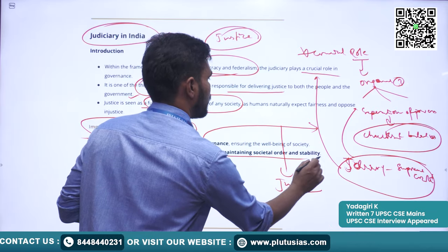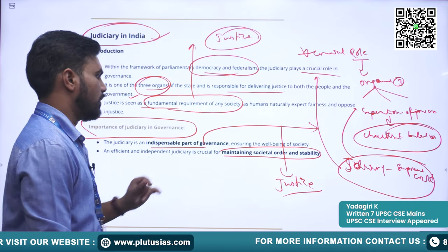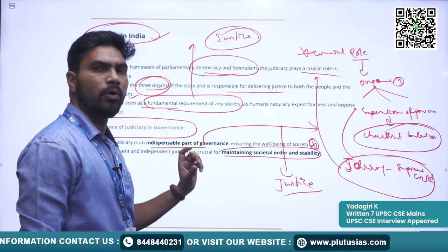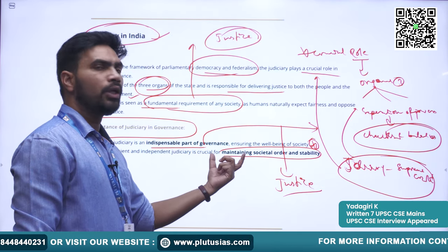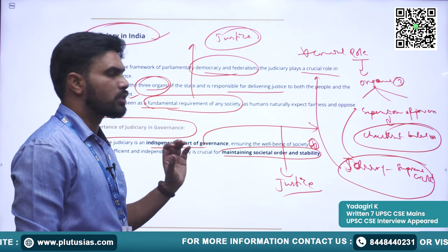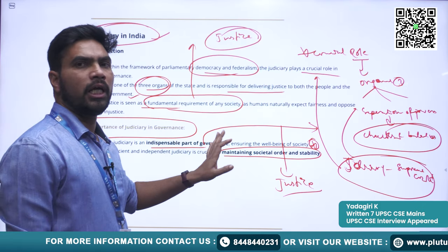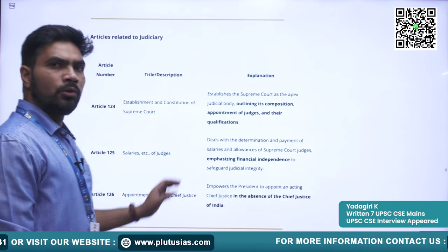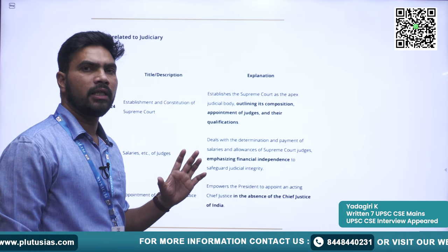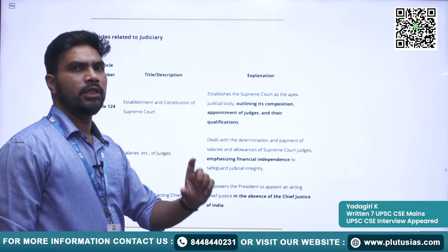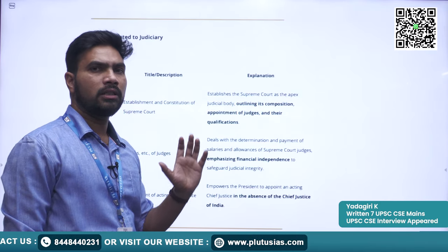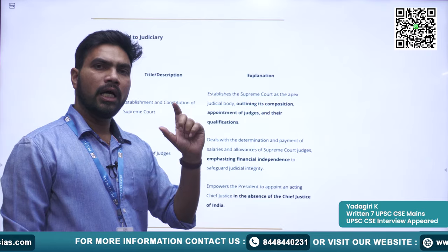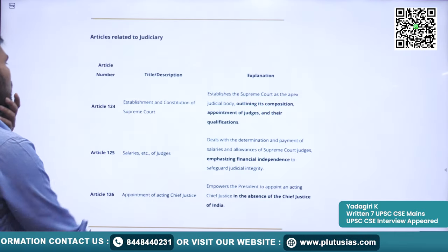Try to remember these phrases because they may come as points in questions and you can use them in mains answers. These aspects explain the importance of the Judiciary. Before going into all aspects, let us first understand the important articles mentioned in the Constitution with respect to Judiciary. I have only taken the important articles, omitting those that are not critical. First one is Article 124 — Establishment and Constitution of Supreme Court.